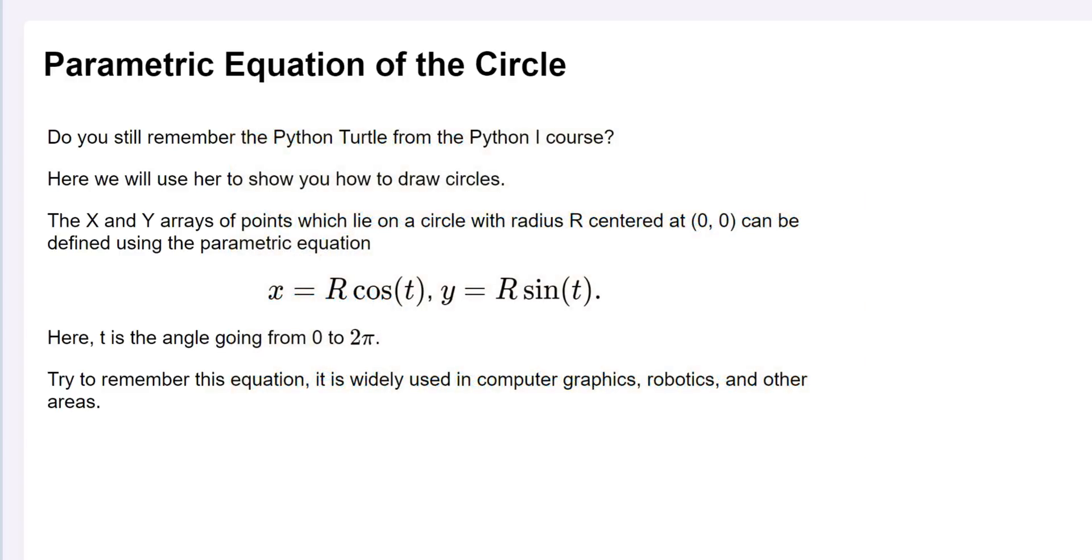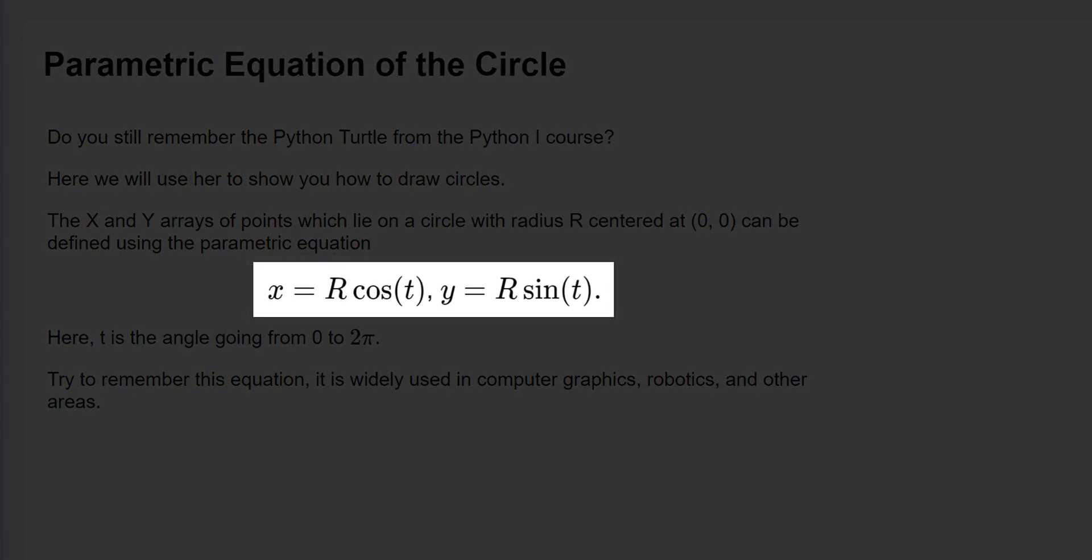We plot the circumference of a circle as a series of short lines. To do this, we must provide the program with lists of X and Y coordinates for each point used to draw the lines. How do we derive these points? Using the parametric equation for a circle, of course.